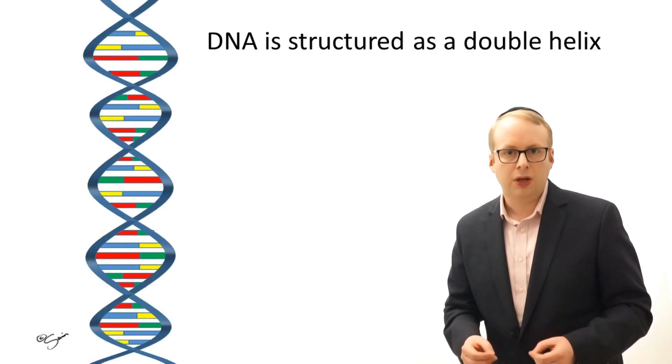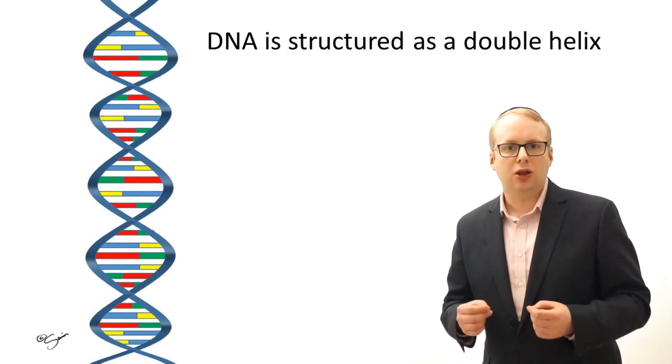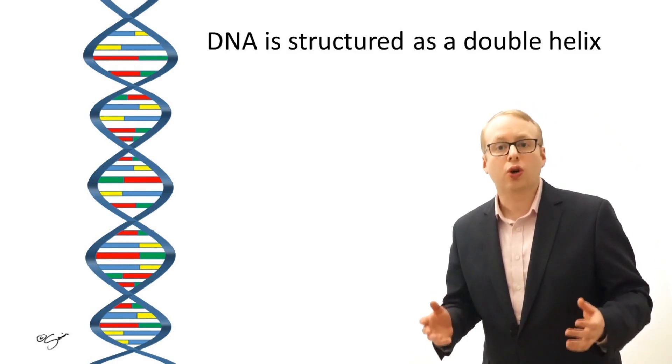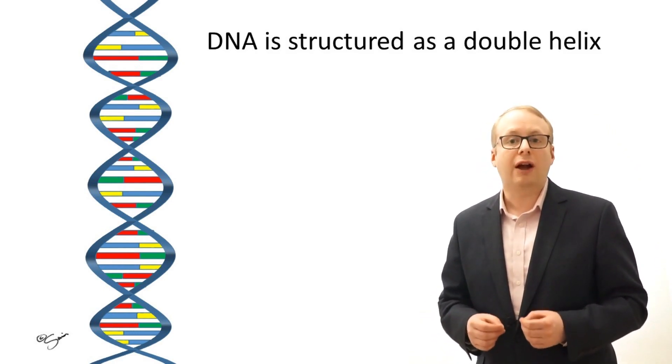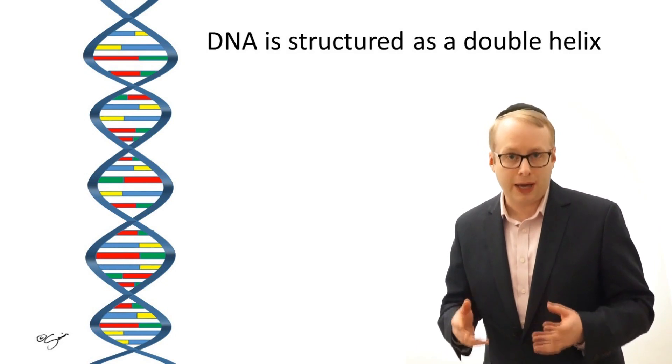The problems start with the DNA having too many codons. These are the units which make up the genetic code. DNA contains the instructions for making the structures and functional components of cells. The information is contained in long chains called chromosomes, of which humans have 23 pairs.